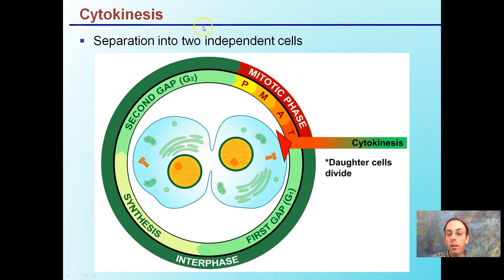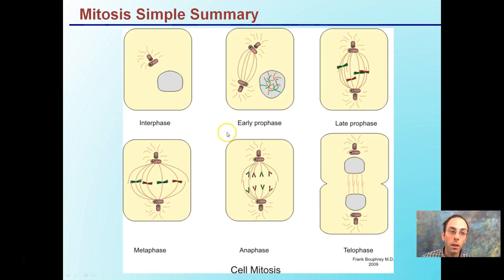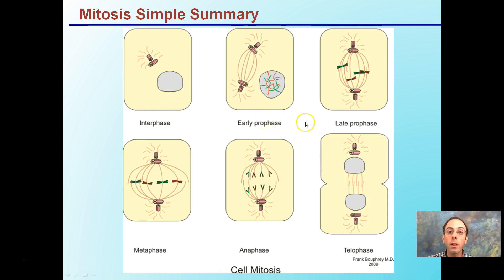Cytokinesis is the actual separation into two independent cells. It's at the very end of the mitotic phase and is considered its own separate phase — that's when the two cells actually separate completely. A visual summary follows: interphase, early prophase, late prophase, metaphase with chromosomes lined up on the plate, anaphase, and then telophase, followed by cytokinesis.